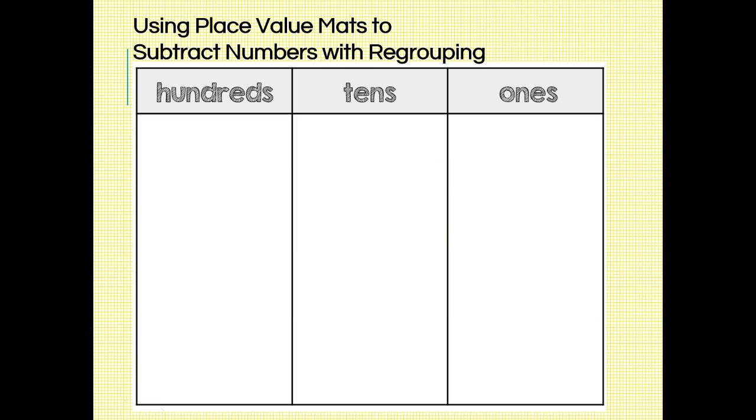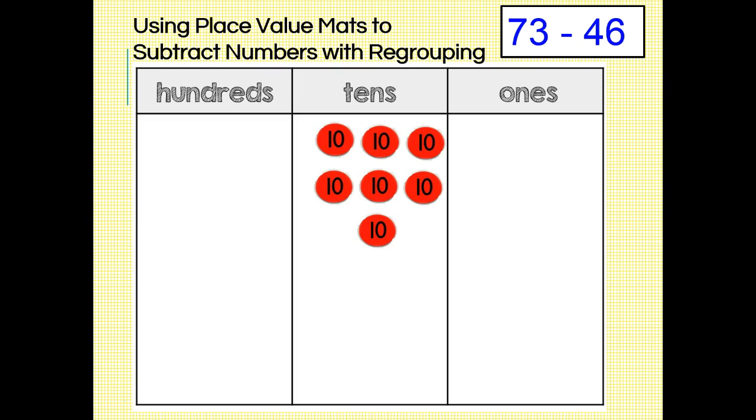This is our last problem, 73 minus 46. Again, we start by laying down disks to represent our minuend of 73. So we'll put down seven tens disks and three ones disks. Do we have enough tens in our minuend of 73 to subtract four of them? Yes, we do. What about ones?